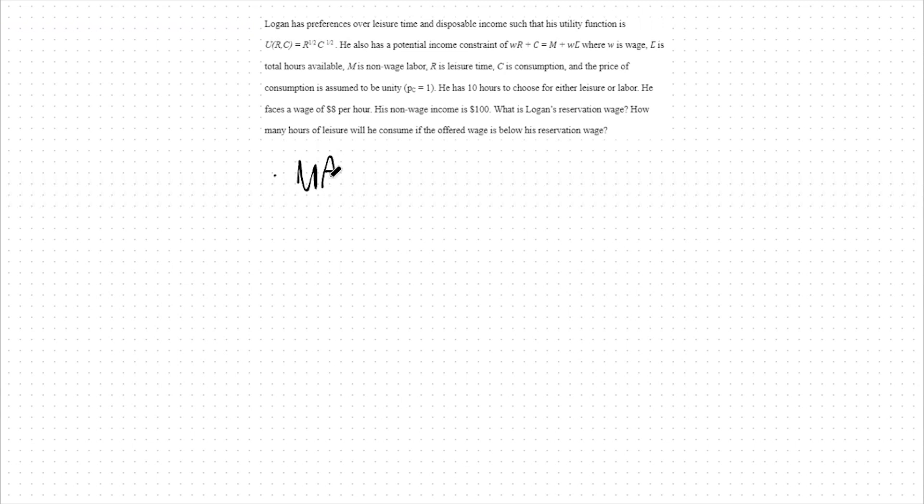Mathematically, the reservation wage is the marginal rate of substitution of our utility function where C is equal to our non-wage income, meaning we use only non-wage income to consume goods, and R is equal to L bar, meaning I work zero hours still, or my recreation is my total amount of hours available to me.